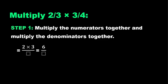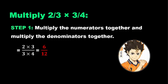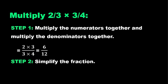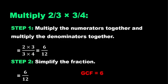times 3 equals 6, and multiply the bottom numbers: 3 times 4 equals 12. So we have 6/12. Step 2: Simplify the fraction. Both 6 and 12 can be divided by the greatest common